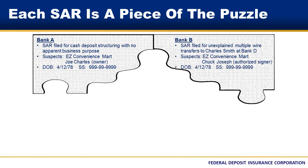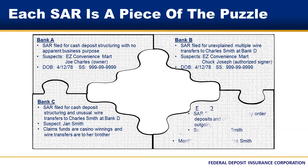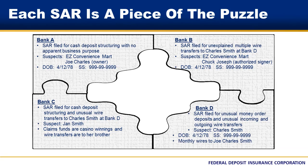Bank B filed a SAR on EZ Convenience Mart for unexplained multiple wire transfers to Charles Smith at Bank D. Chuck Joseph was listed as the suspect and was an authorized signer on EZ Convenience Mart's account. Bank C filed a SAR naming Jan Smith as a suspect for structuring due to multiple cash deposits just under $10,000 designed to evade reporting requirements. Jan stated that the cash was from winnings at the casino. Shortly after the cash was deposited, Jan wired the funds to Charles Smith's account at Bank D. Jan reported that Charles Smith was her brother who lives out of state. Bank D filed a SAR naming Charles Smith as a suspect for receiving multiple large money orders and wire transfers from Bank A, Bank B, and Bank C. Based on the bank CDD of Charles Smith, the deposits and outgoing withdrawals had no apparent lawful purpose.